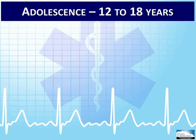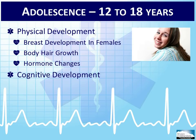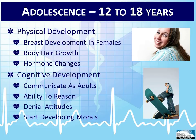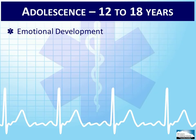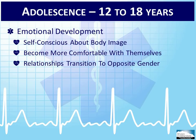Adolescence is the transition period between childhood and adulthood. There are a lot of physical changes in the body, which leads to increased modesty in both genders. Breast development in females, pubic hair growth, and hormonal changes all bring about new emotional and physical concerns. Cognitively, the adolescent is able to communicate as an adult and has an increased ability to reason as they age, which can contradict some of their actions as they tend to deny that real-life tragedies like death and accidents may happen to them. The adolescent will also start to develop morals as they increasingly find themselves in unique positions involving peers and family.